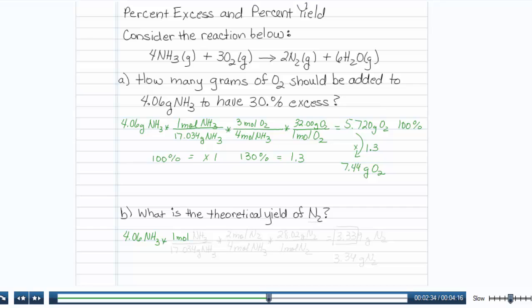I will take the same factor I had in part A and convert to moles of NH3. Now my ratios change because I'm interested in N2. So I will look at the reaction and notice that for every 4 moles of NH3, I make 2 moles of N2.